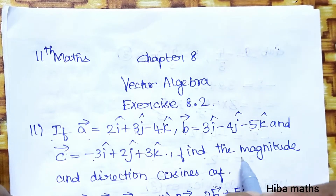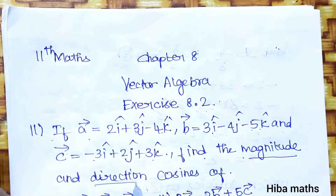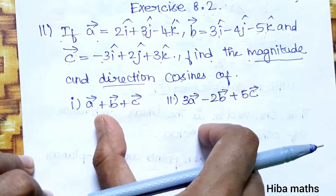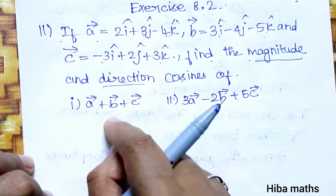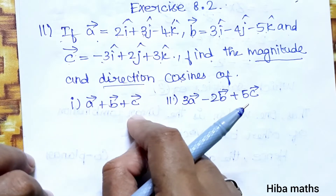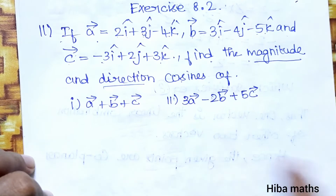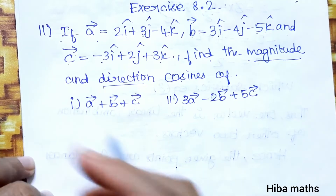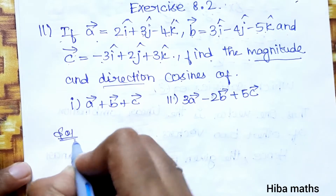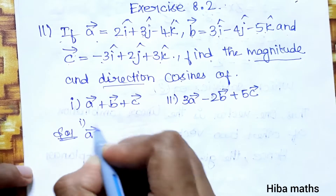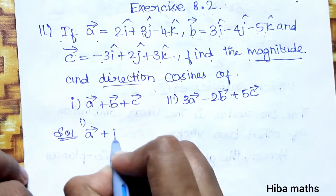Find the magnitude and direction cosines. There are two questions: in question 1 we have a+b+c, and we substitute the given values to find the magnitude and direction cosines. It's a very simple solution. So vector a plus vector b plus vector c: